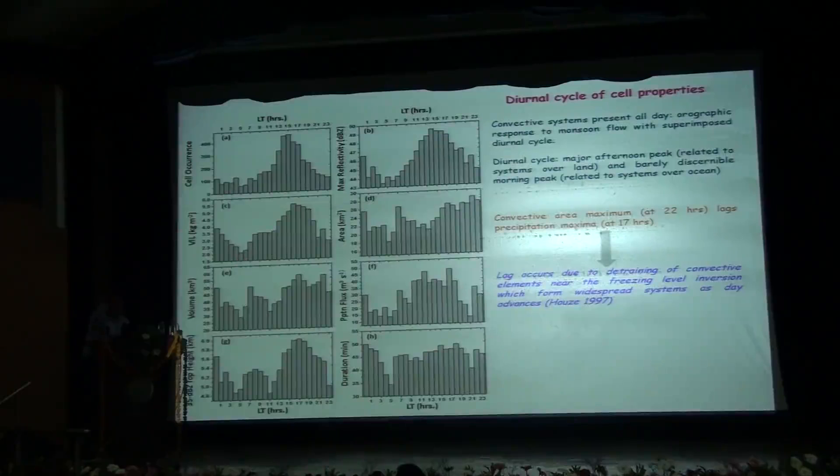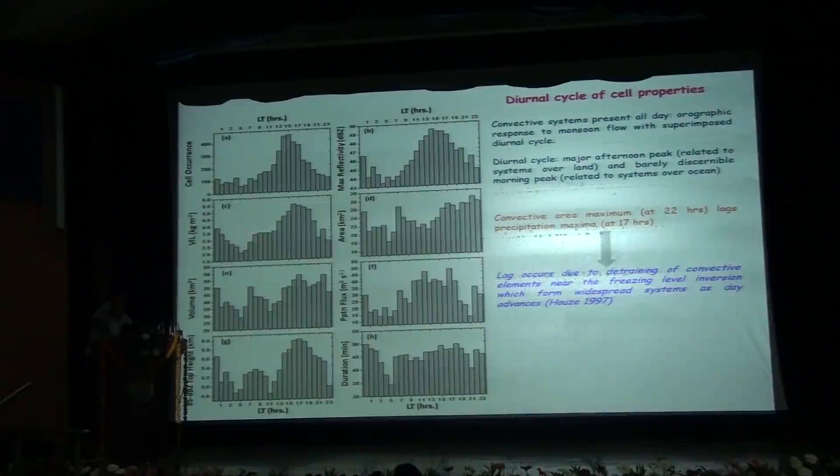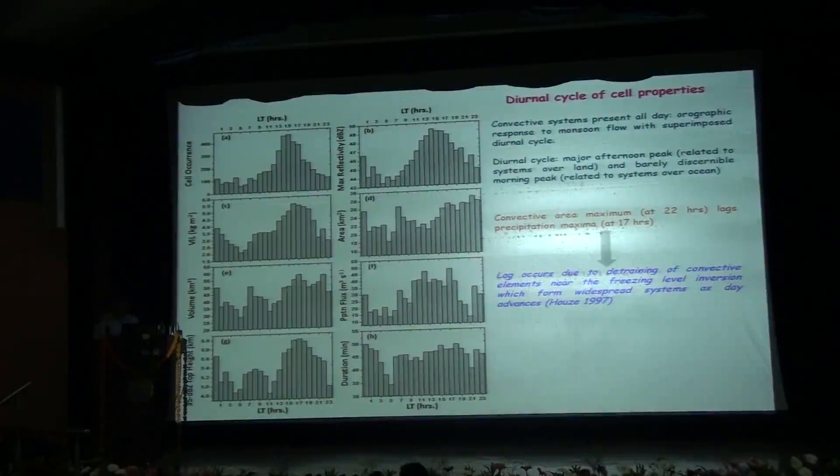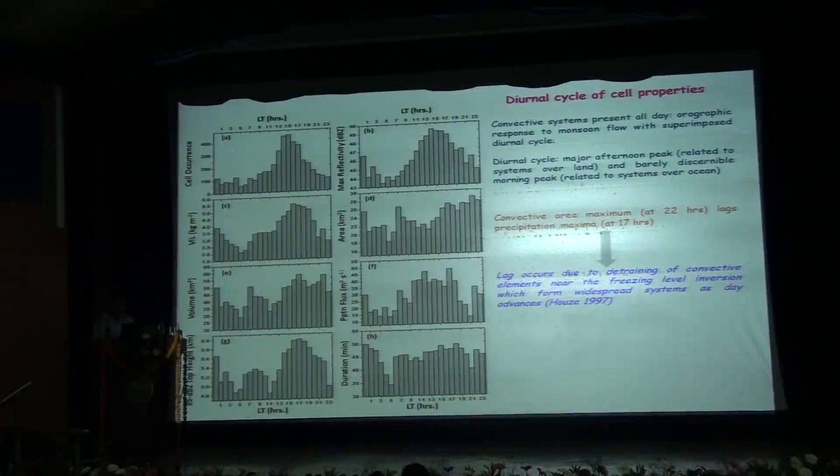From these figures it is clear that the convective systems are present throughout the day as an orographic response to monsoon flow with a superimposed diurnal cycle, with a major afternoon peak which may be related to systems over land and a barely discernible early morning peak related to systems over the ocean. The maximum in convective area lags several hours to the maximum in the precipitation flux. Peter and Houze have attributed this lag to the detrainment of convective elements near the freezing level inversions which forms widespread systems as the day advances.